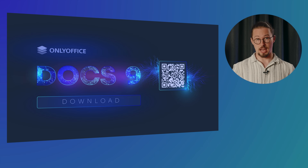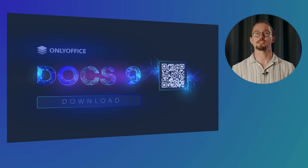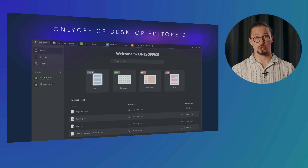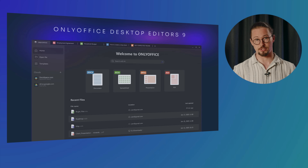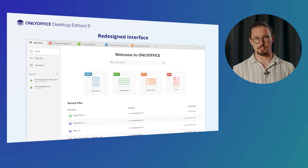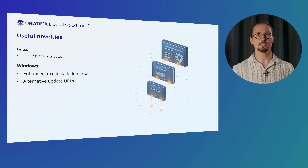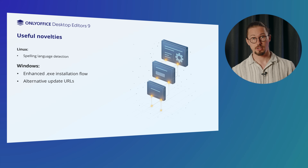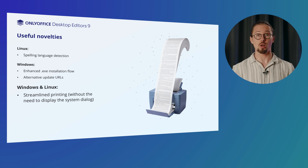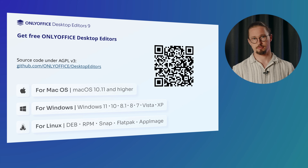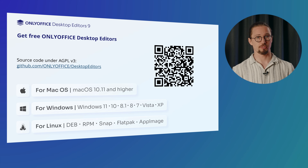To download the latest version of self-hosted online editors from the official website, just scan the QR code and access the download page. The OnlyOffice desktop app, which allows working with all kinds of Office docs on your PC or laptop, is also updated to version 9.0. It's built on the same engine as OnlyOffice Docs, so the newest version comes with the majority of features available in the online editors, including the redesigned, polished interface. Among additional enhancements: spelling language detection for Linux packages, enhanced .axi installation flow, alternative update URLs for Windows, and streamlined printing without the need to display the system dialog for both Linux and Windows users. The source code of the app is also available on GitHub.